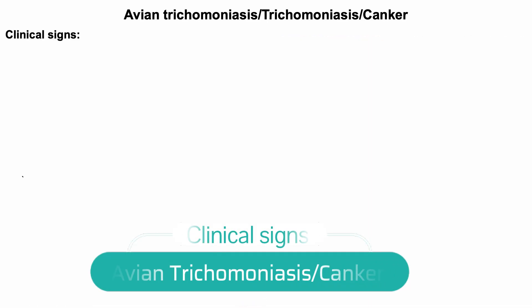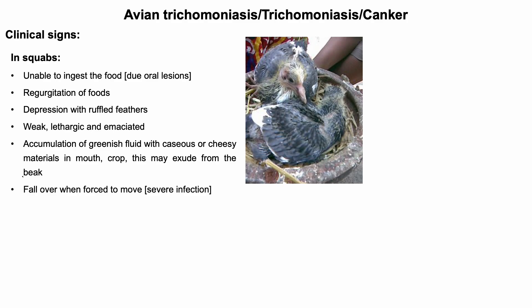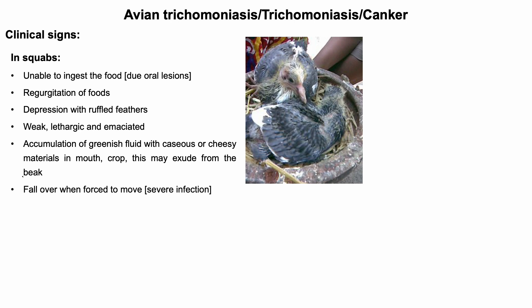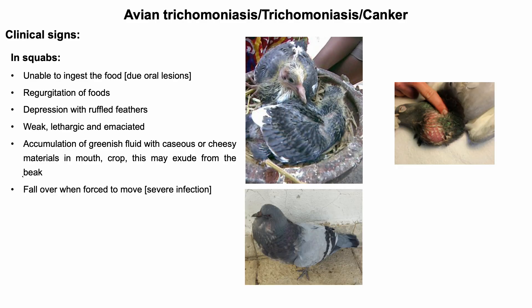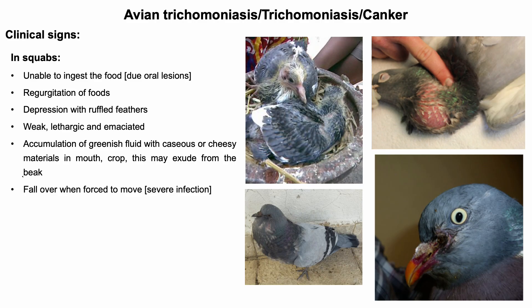Clinical signs of avian trichomoniosis or canker: due to the development of oral lesions, affected birds are unable to ingest food. Lesions in the mouth and esophagus prevent the passage of ingested grain and seeds, causing regurgitation. Affected birds show signs of depression with ruffled feathers, and later become weak and emaciated. Greenish fluid accumulation with caseous or cheesy material may be seen in the mouth and crop, and this material may be seen around the beak and eyes, which may be confused with avian pox. Severely infected pigeons may fall over when forced to move.